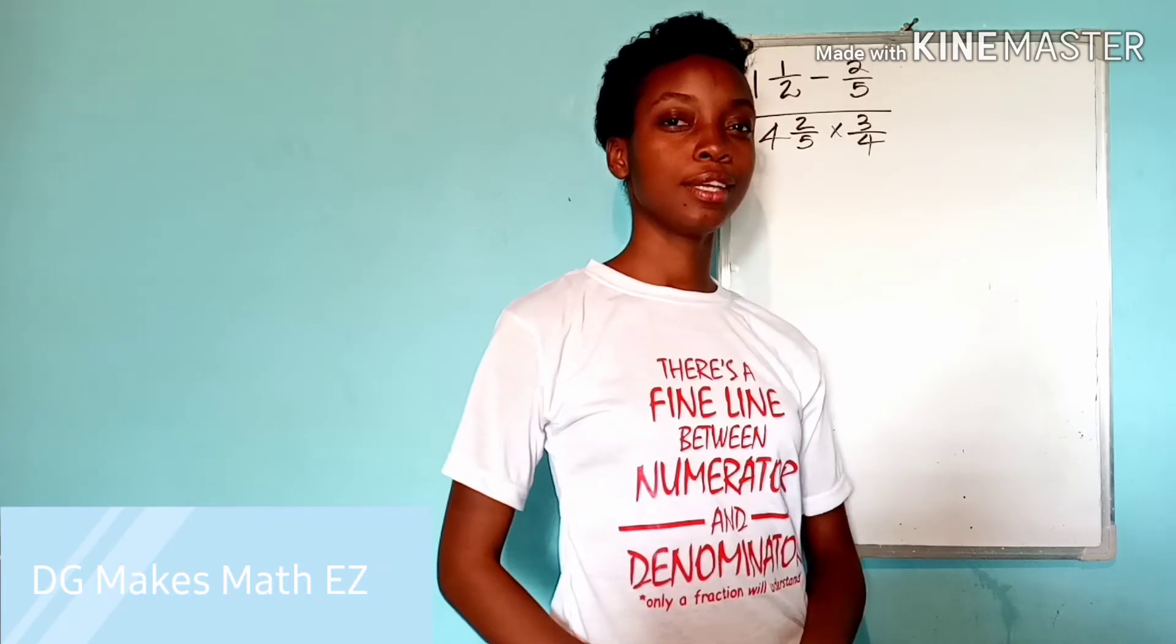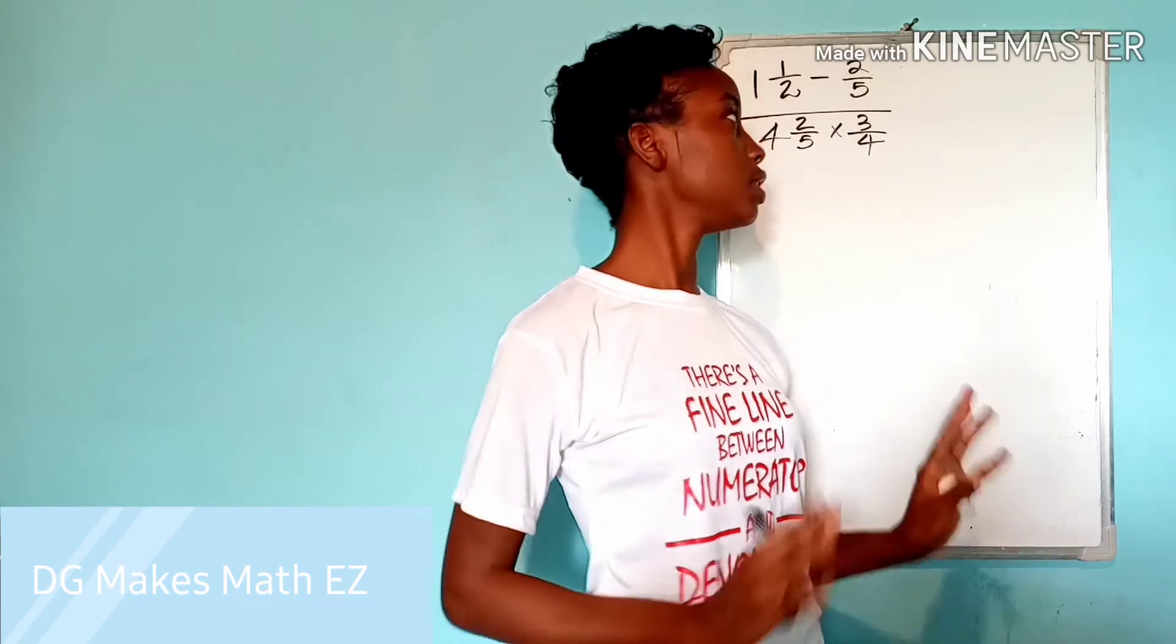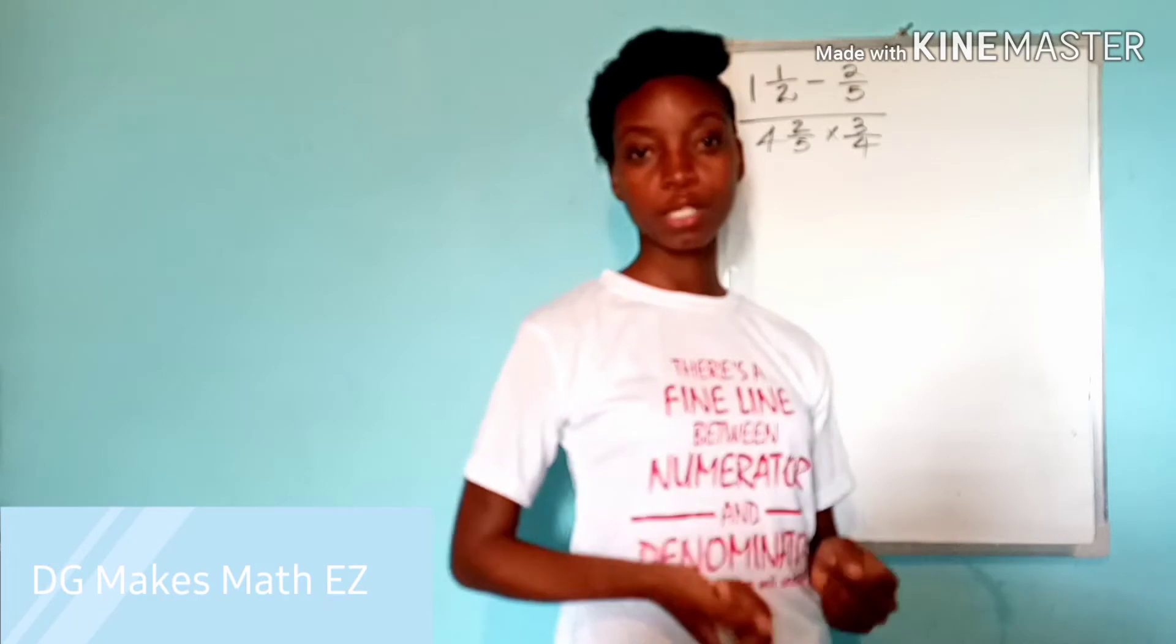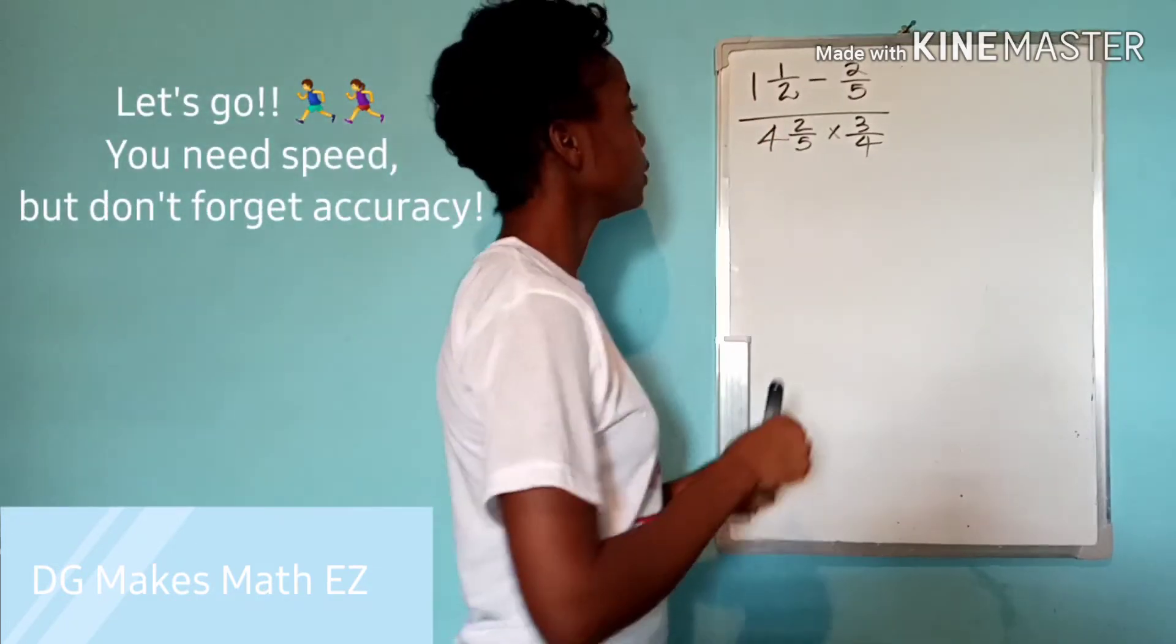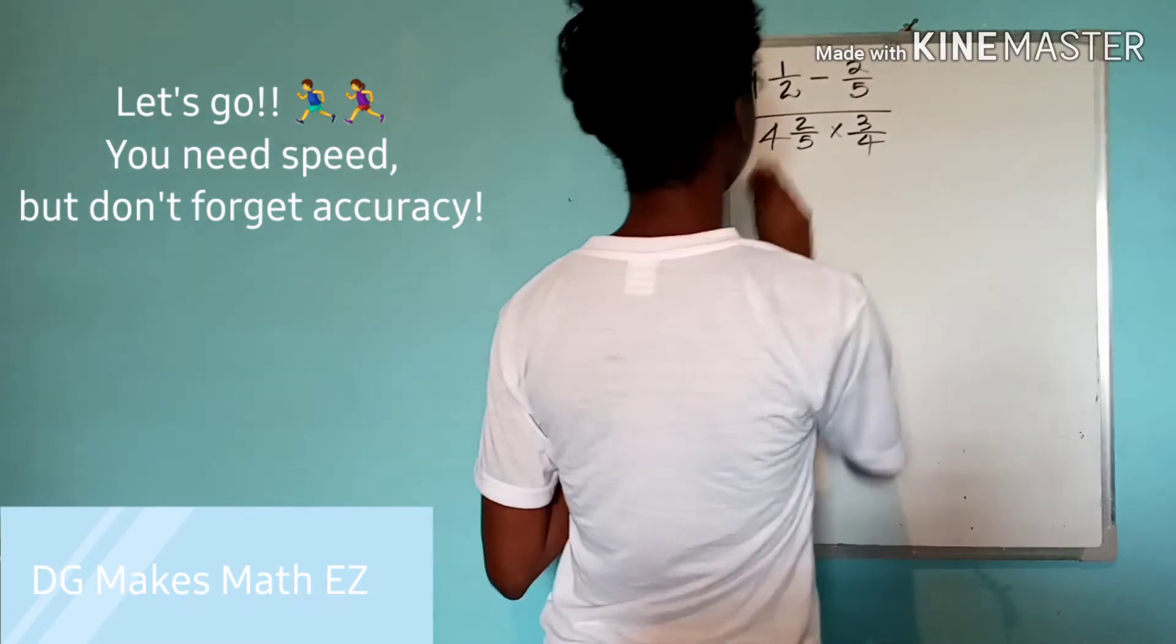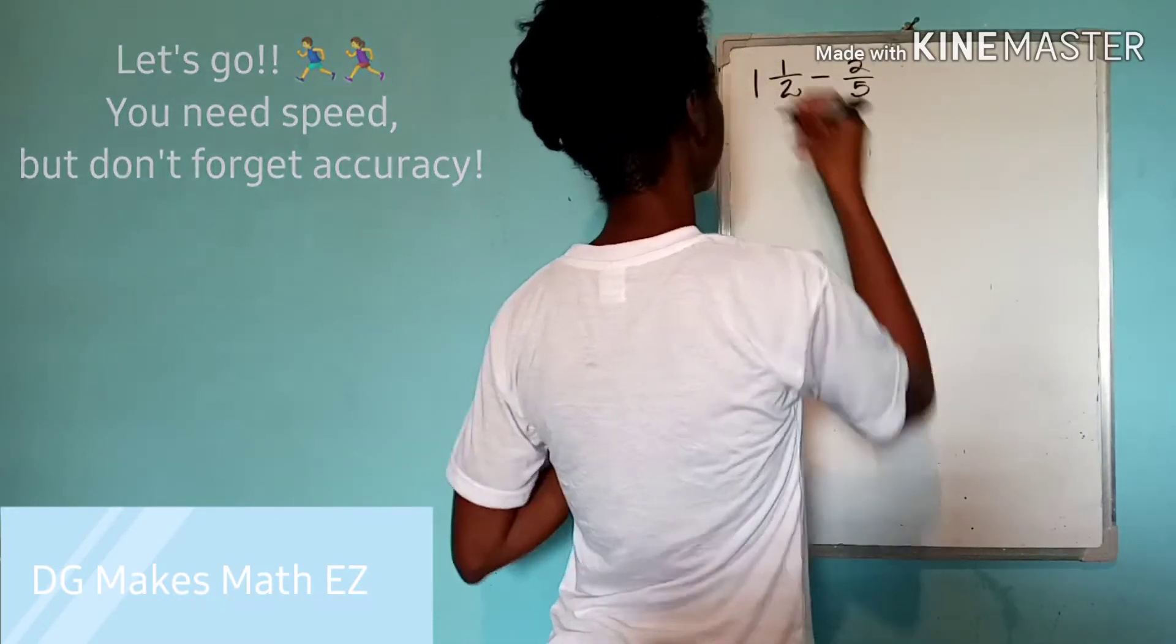If you got that right, then you should have no issue getting this one correct as well. So race me to the finish line if you wish. Here we go. So as I said before, we can rewrite this and I'm going to rewrite it for space purposes. Of course, I must also put this in a bracket because the answer I get here must be divided by the answer I get for this section.